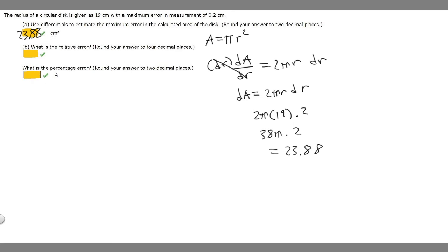What is the relative error? Round your answer to four decimal places. The relative error is 23.88 divided by our original formula, πr². r is 19, so it's π times 19².